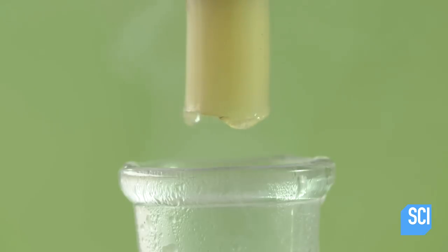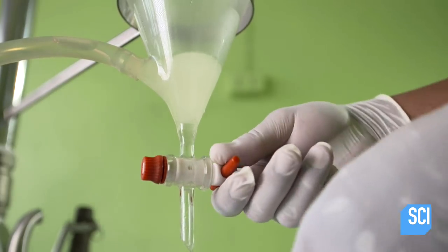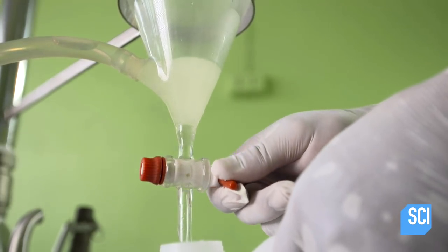The liquid oil and water drip out into a flask. Oil and water don't mix, so the oil floats to the top, and the water is drained off and recycled back into the distiller.